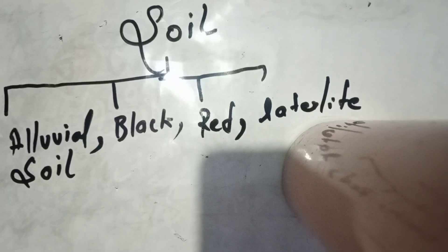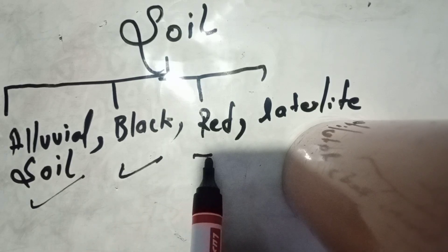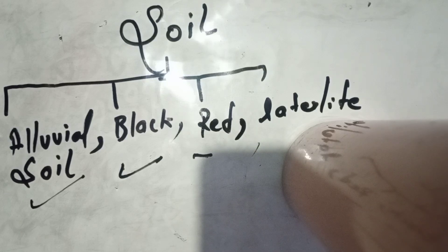only four types of soil: alluvial soil, black soil, laterite soil, and red soil. We have to learn about the characteristics of these soils, so one by one we will start covering these characteristics.